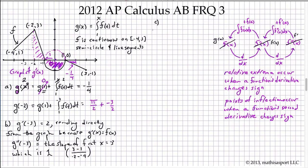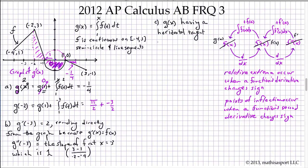Part C asks for the x-coordinates of horizontal tangent lines of G. We're looking for where G prime equals zero, which is the same as where F of X equals zero. This occurs at x equals negative 1 and x equals 1.